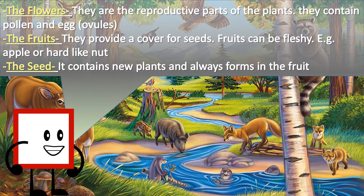The flower: flowers are the reproductive parts of the plant. They contain pollen and egg ovules. The fruit provides a cover for seeds. Fruit can be fleshy, e.g. apple, or hard like nuts. The seed contains new plants and always forms in the fruit.